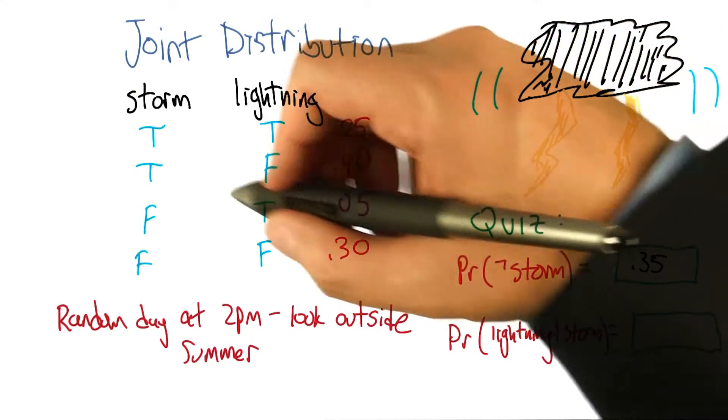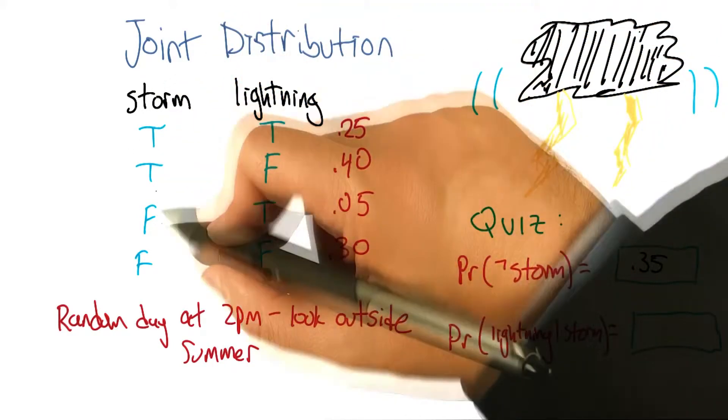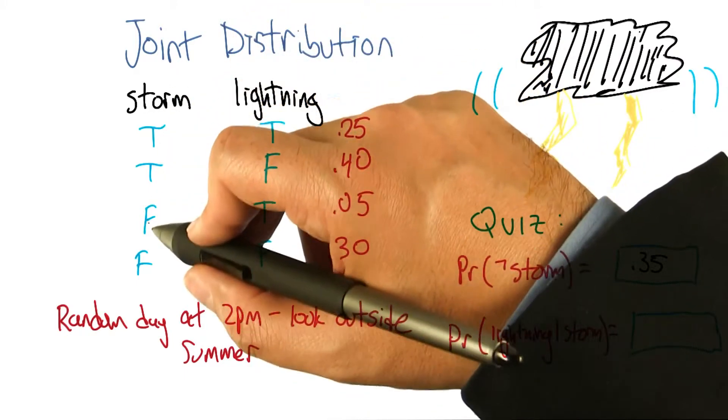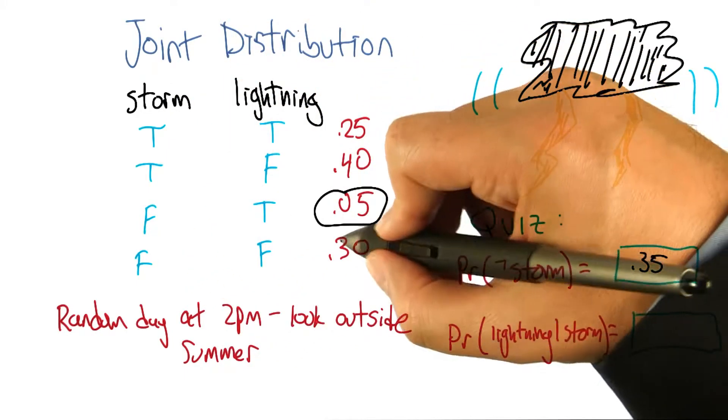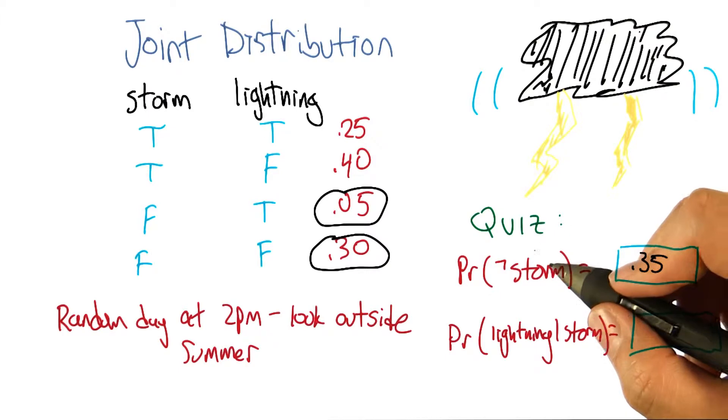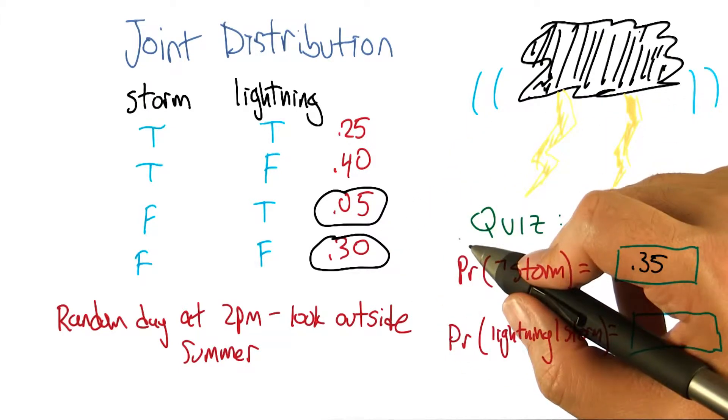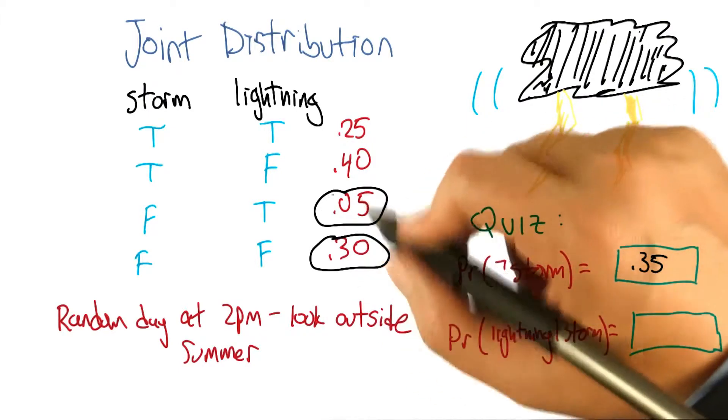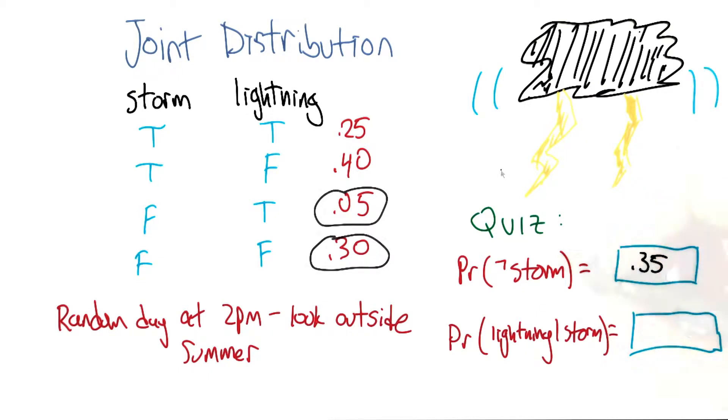That's great. Yes, so that's exactly what you did. So you went through, and now all that matters in the universe are the cases where there's not a storm. And that ended up being these two numbers. And you said, well, those are the two different cases that can happen. We'll just add their probabilities because they're non-overlapping. And you got 0.35. Great.